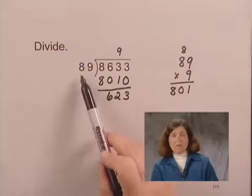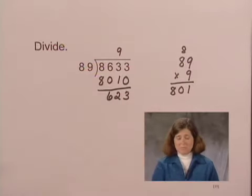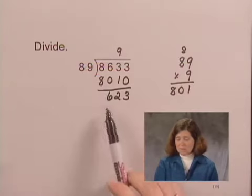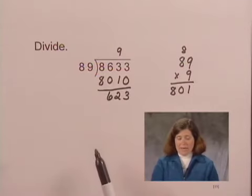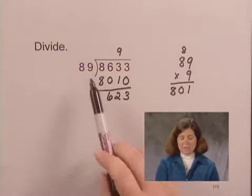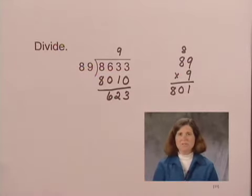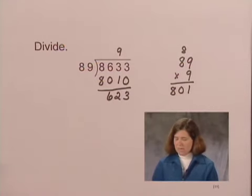623 is greater than 89, so we need to do another step in the division. We ask ourselves, how many times does 89 go into 623? Again, to estimate, we might say how many times does 90 go into 620? And we would estimate about 7 times.